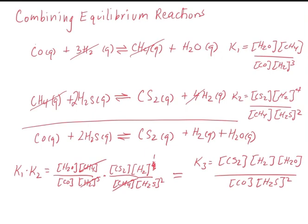So what we can say is that if we know the values for K1 and K2, if we multiply those values together, we will get the value for the composite equilibrium expression, which is K3.